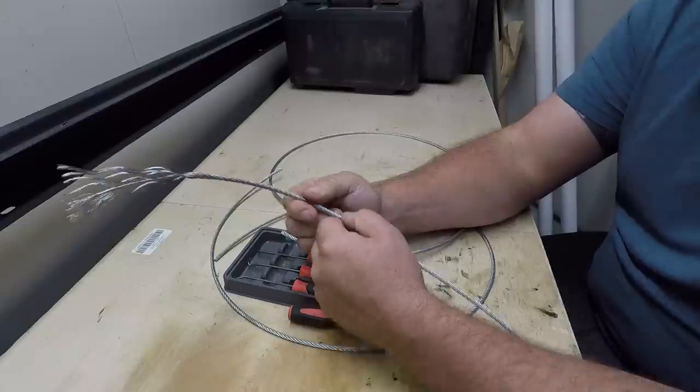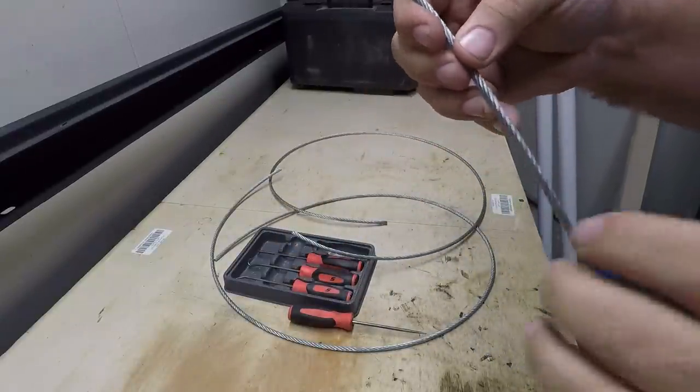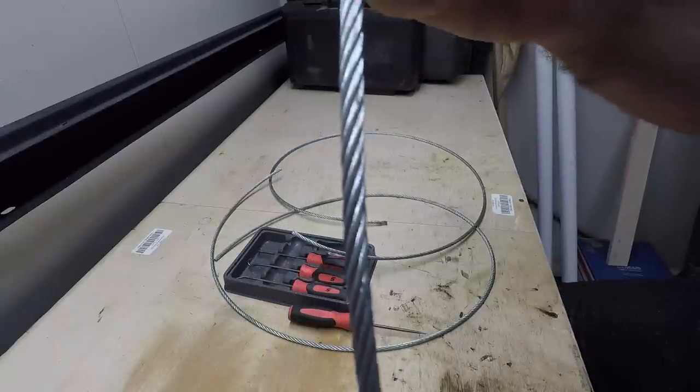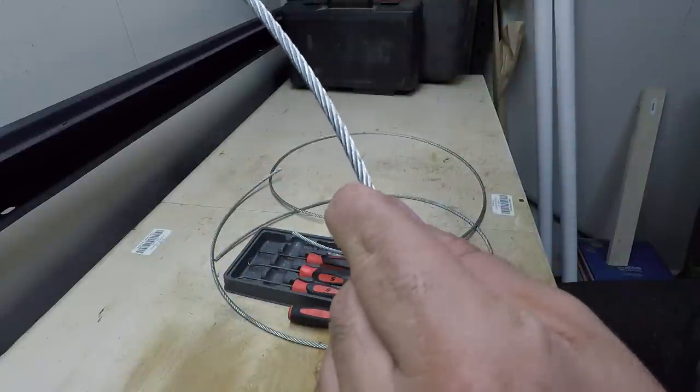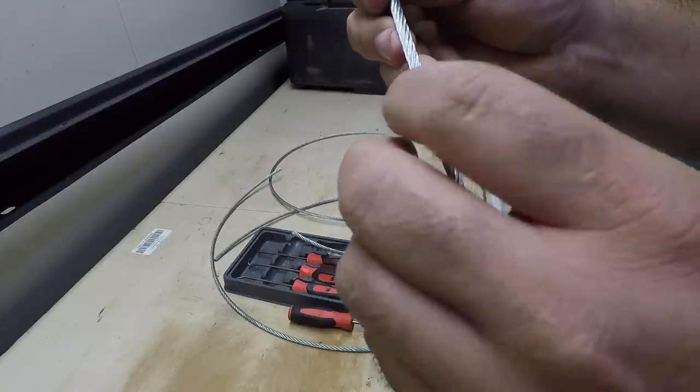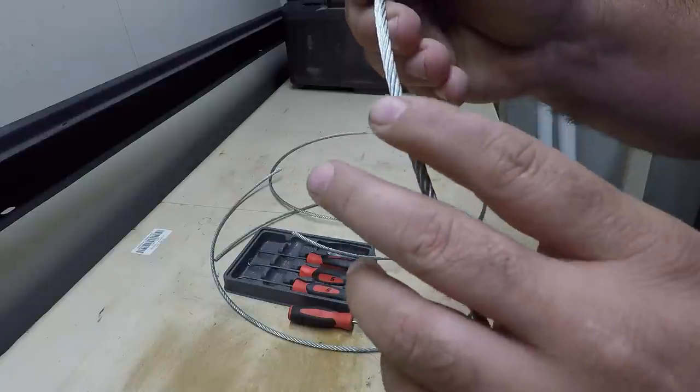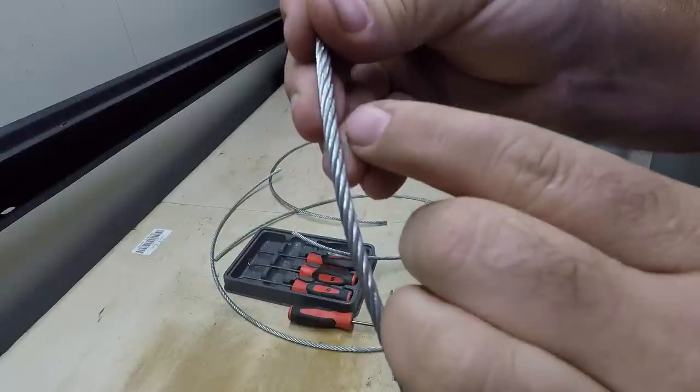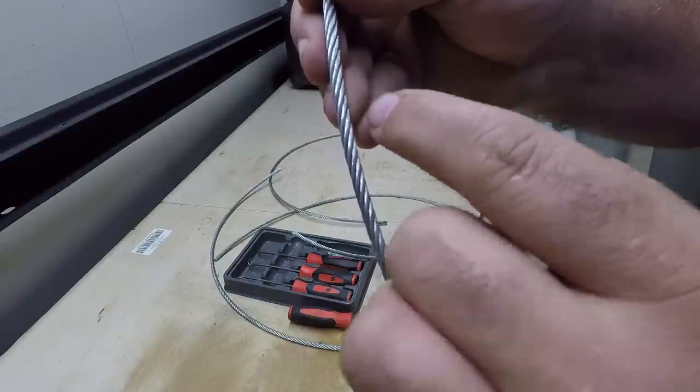This is right hand regular lay rope. There's also left hand regular lay rope, and what that is instead of the wire being wound this way around the rope, it would be wound this way. The regular lay portion of that is how are the wires oriented into the strand. So this is regular lay rope. They also have right hand Lang lay rope, which instead of the wires being oriented along the longitudinal portion of the rope where they kind of all form a straight line, the wires kind of spiral around the rope.